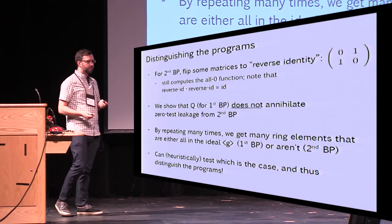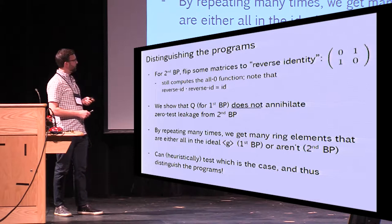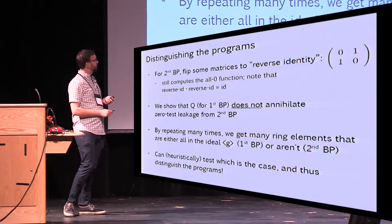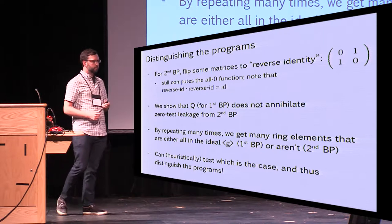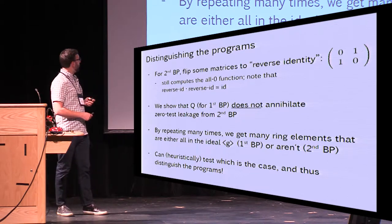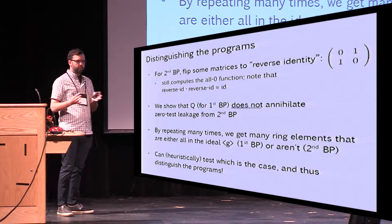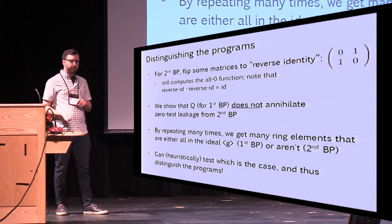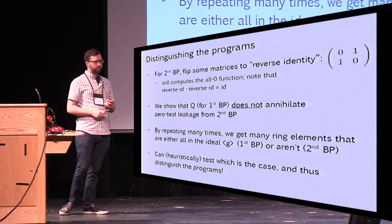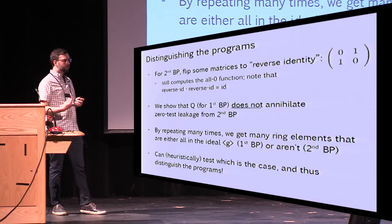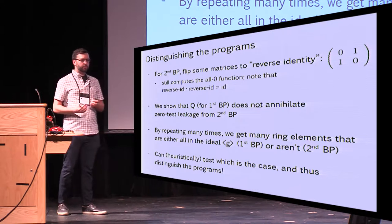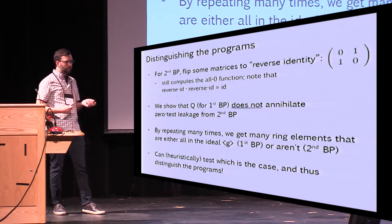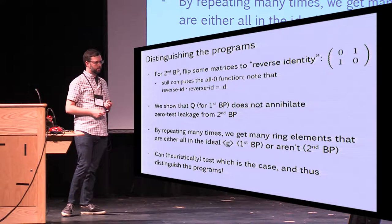For the second branching program, we choose almost the same thing, except we flip some of the matrices to be the reverse identity instead of the standard identity. This still computes the all-zeros function because this matrix is its own inverse, so as long as you're always multiplying an even number of these, it's still the all-zeros function. We show that the polynomial Q that annihilates the first branching program does not annihilate the second. If we repeat this process many times, we get many ring elements that are either all in the ideal G or not, and we can heuristically test this with Gaussian elimination, since these can be thought of as lattices.